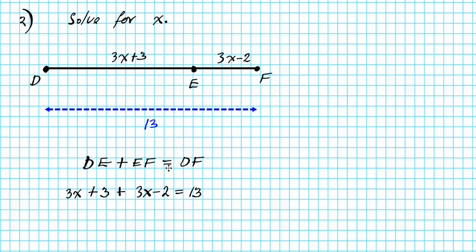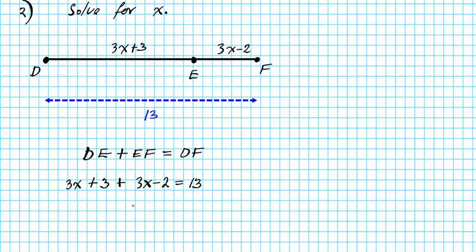After writing down the segment addition postulate and carrying out the substitution, we now solve this multi-step algebraic equation for x. On the left side, we combine like terms: 3x and 3x combine to give 6x. The constants positive 3 and minus 2 combine — keeping the sign of the bigger — giving positive 1. So we have 6x plus 1 equals 13.